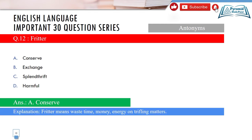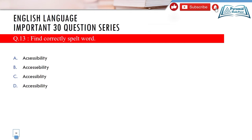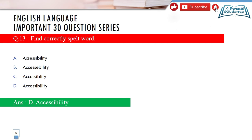Question 13 asks for the correctly spelled word. The options are different spellings of the same word. The correct answer is option D — 'accessibility' — which is spelled correctly.